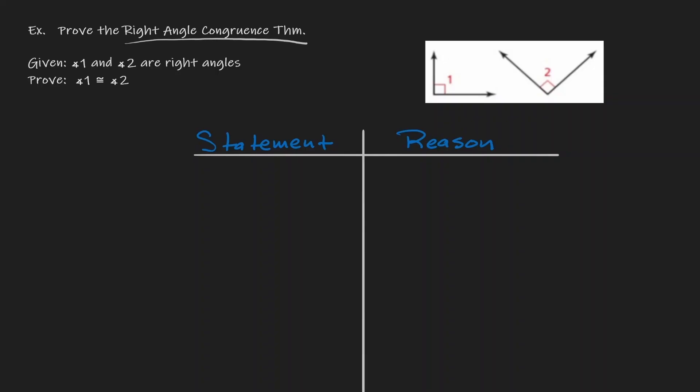What does the right angle congruence theorem say? It says that if we are given two right angles — in this case angle one and angle two — then those two angles are congruent to each other. And maybe just looking at this figure, you might be saying, what is there to prove? It's very self-explanatory.